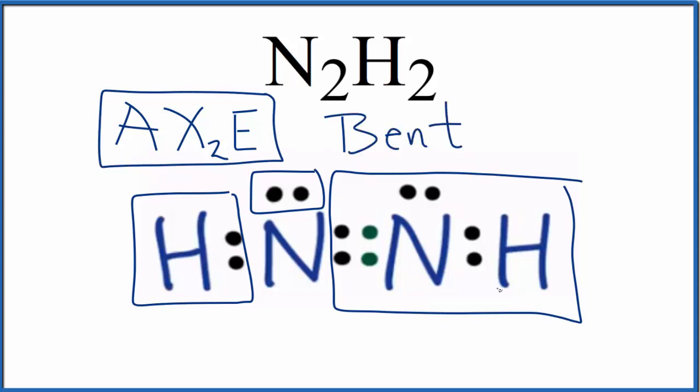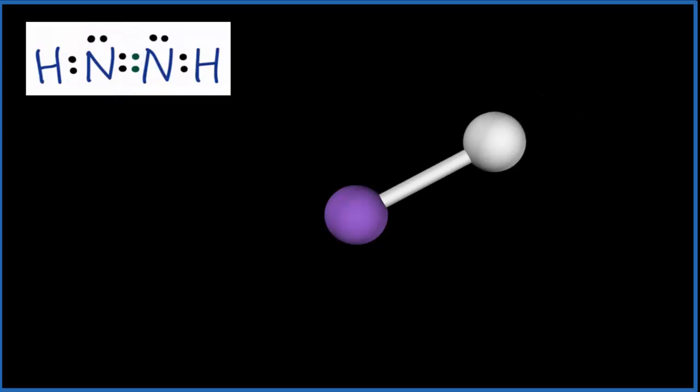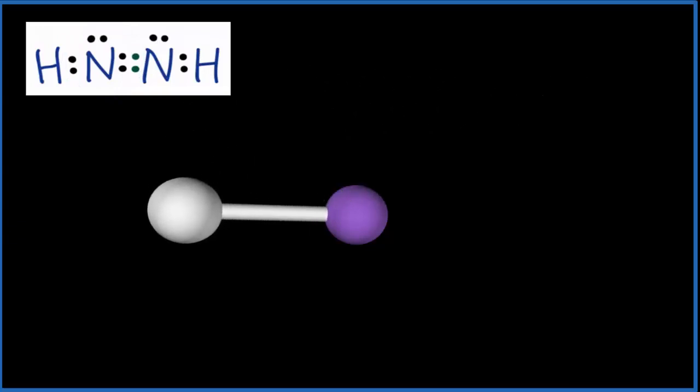Let's look at a visualization though to really kind of help you understand what's going on here. So remember we're considering the nitrogen that was on the left our central atom. So we have that single bonded hydrogen, let's put that over there. Then we had the double bond to the other nitrogen, put that right there.